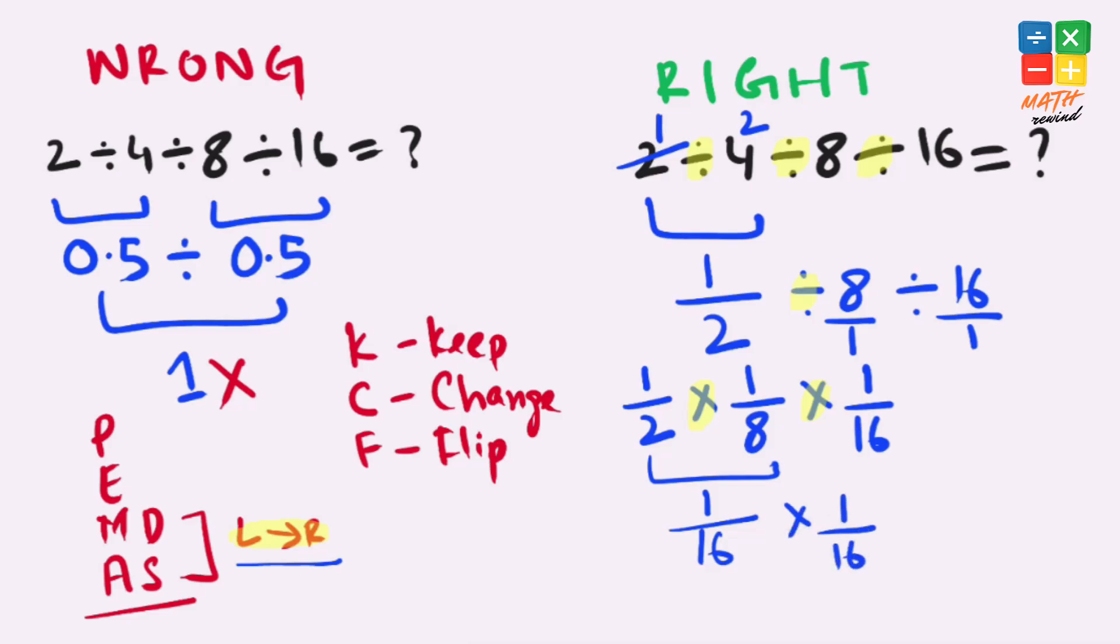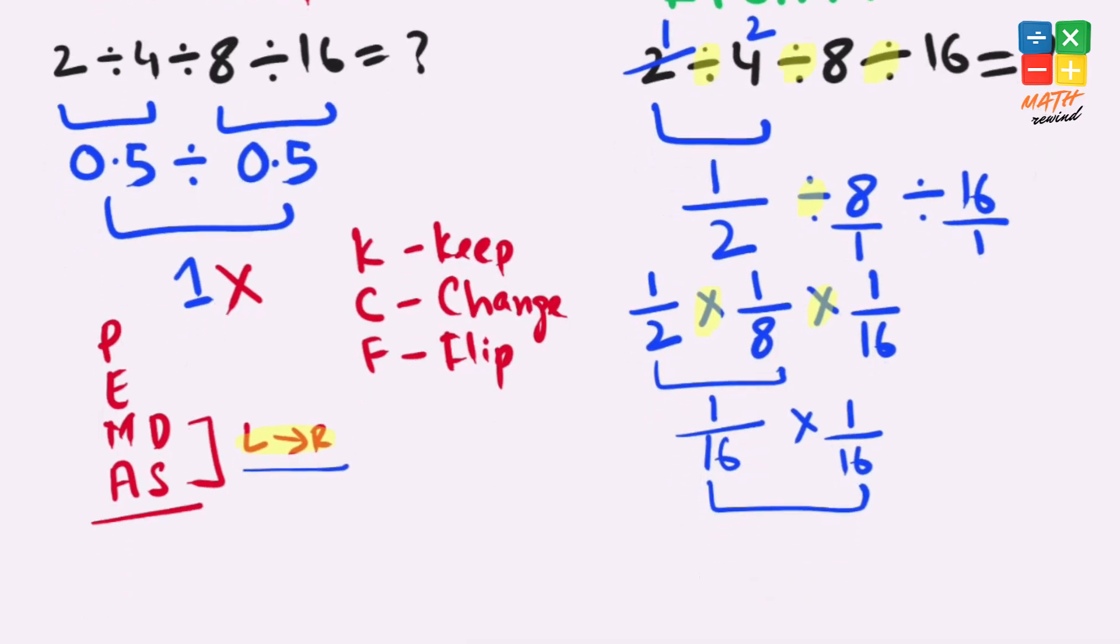Times 1 over 16, and 1 over 16 times 1 over 16 gives us 1 times 1 is 1, and 16 times 16 is 256, which is the right answer to this problem.